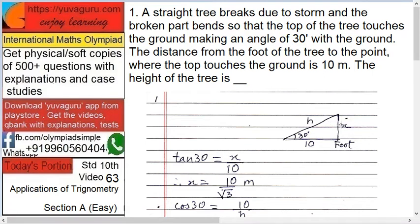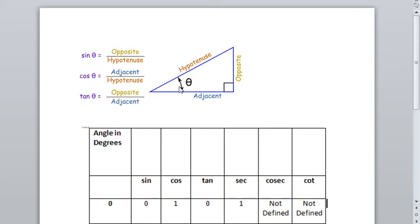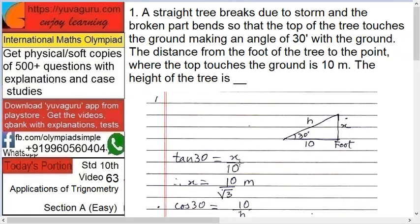Therefore, tan 30 equals to x upon 10, right? x upon 10. What is tan 30? Opposite upon adjacent. So x upon 10, but tan 30 we know is 1 upon root 3. Therefore x equals to 10 upon root 3.